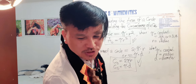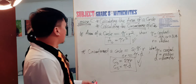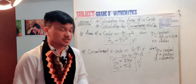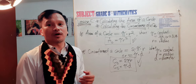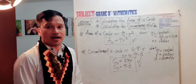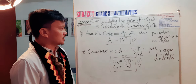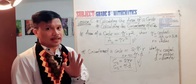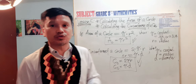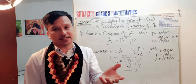The last time we discussed calculating the area of a circle and calculating the circumference of a circle, using the formula. Now this is part two of our topic, calculating the area of the circle and the circumference.